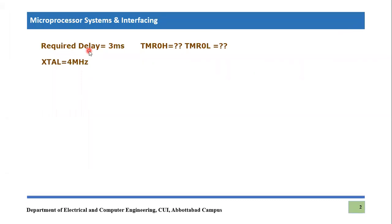Let's say we want to produce a delay using Timer 0 of about 3 milliseconds, and we want to calculate the values for Timer 0H and Timer 0L registers for this specific delay. We are given a 4 MHz crystal oscillator attached to our PIC18F microcontroller.